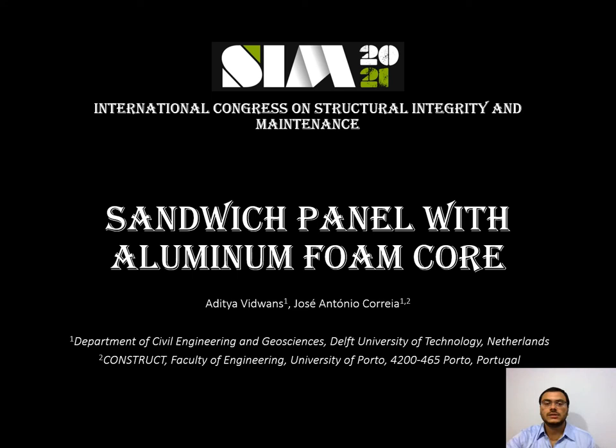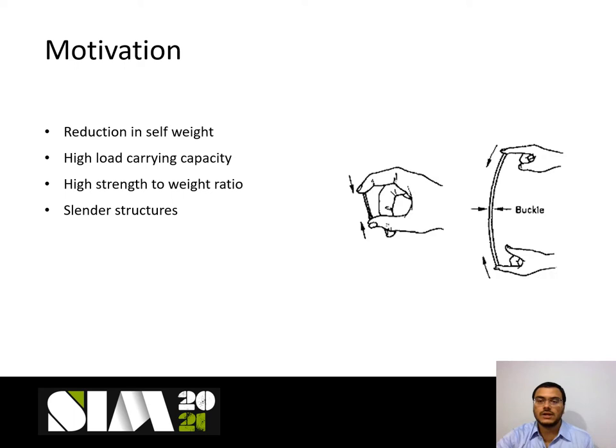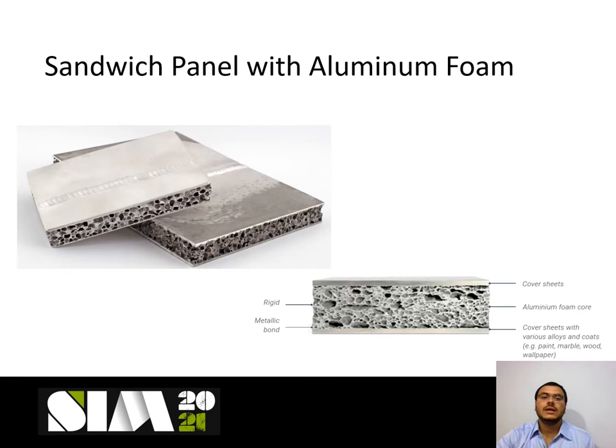The motivation is reduction in self-weight, high load-buckling capacity, and achieving a high strength-to-weight ratio. This will result in a reduction in cross-section, which leads to an increase in the slenderness of the structure. We all know that slender structures are vulnerable to buckling, so we need a better and new alternative — sandwich panels can be that alternative.